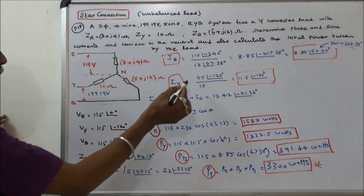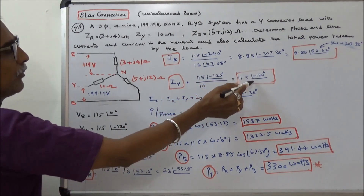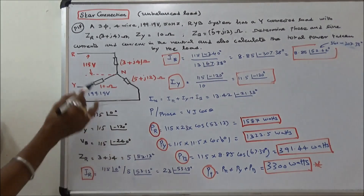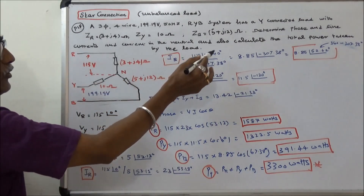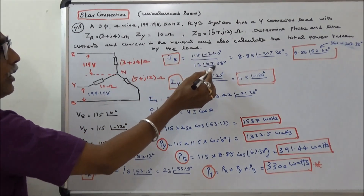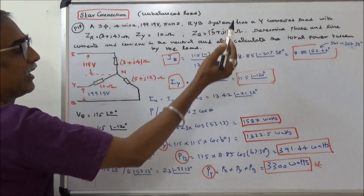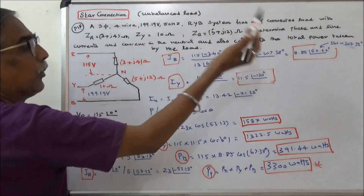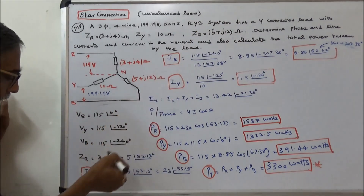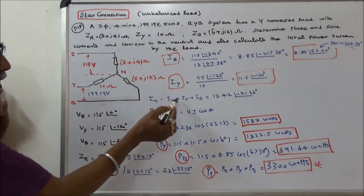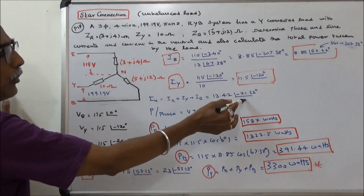IY equals 115 angle minus 120 degrees divided by 10 angle 0 degrees, equal to 11.5 angle minus 120 degrees. IB equals 115 angle minus 240 degrees divided by 13 angle 67.38 degrees, equal to 8.85 angle minus 307.38 degrees, or equivalently 8.85 angle 52.62 degrees. The neutral current is the sum IR plus IY plus IB, equal to 13.42 angle minus 21.33 degrees.